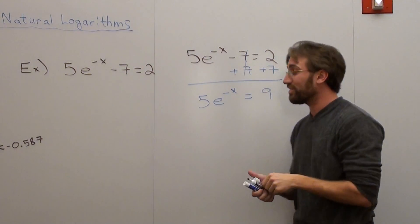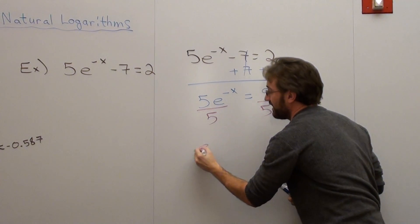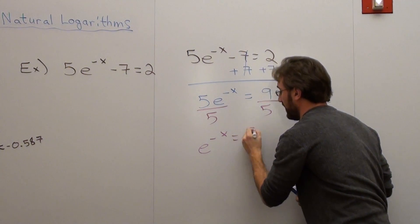And I divide by 5. And when I do that, I get e to the negative x equals 9 fifths.